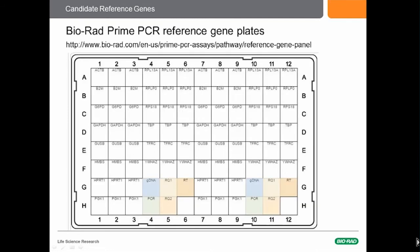One good source of reference genes, and a good way to test them, is the BioRad PrimePCR reference gene plate. It has 14 good candidate reference genes, plus controls on the plate for RNA degradation, presence of genomic DNA, PCR amplification, and the function of reverse transcriptase. In addition, you can substitute some of the reference genes for other genes you've picked out yourself and make it into a custom plate.